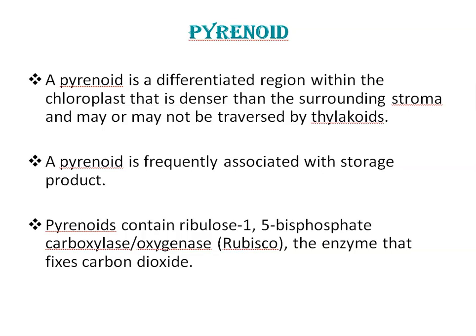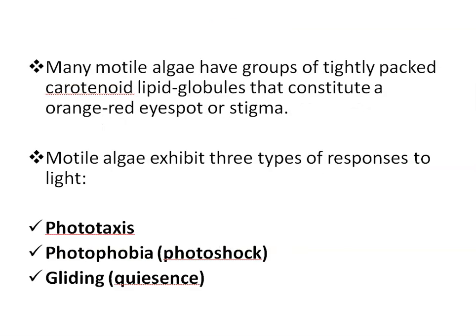The pyrenoid is frequently associated with storage products. Pyrenoids contain ribulose 1,5-bisphosphate carboxylase/oxygenase, that is rubisco, the enzyme that fixes carbon dioxide. Consequently, the size of the pyrenoid will vary depending on how much rubisco is present. Many motile algae have groups of tightly packed carotenoid and lipid globules that constitute an orange-red eye spot or stigma that is involved in responses to light.